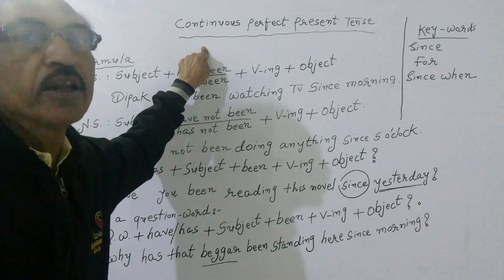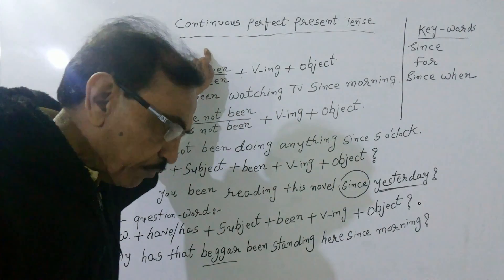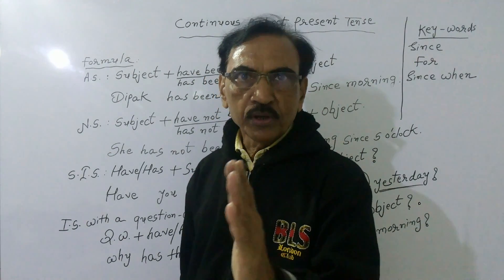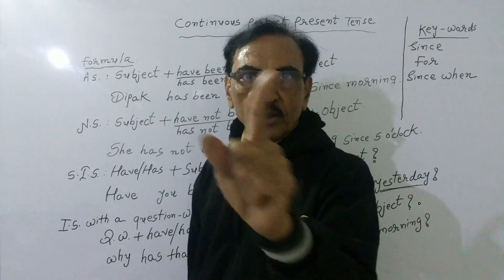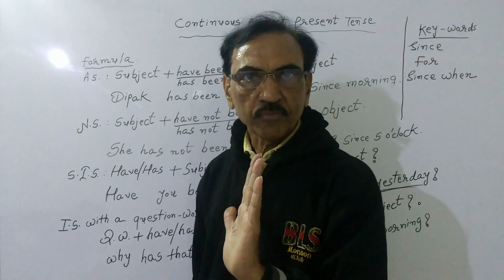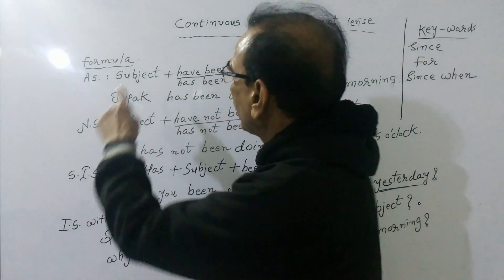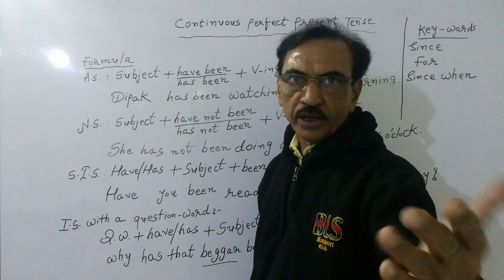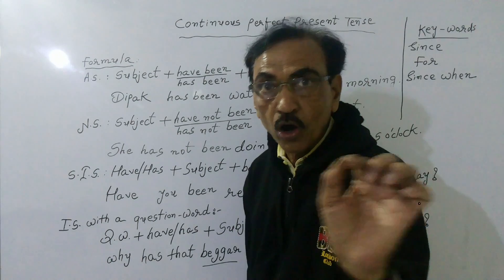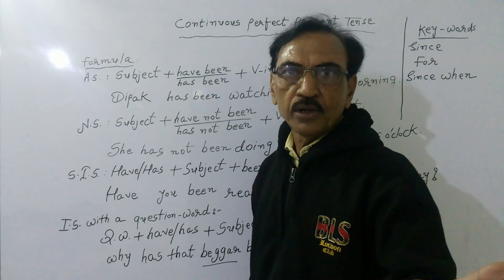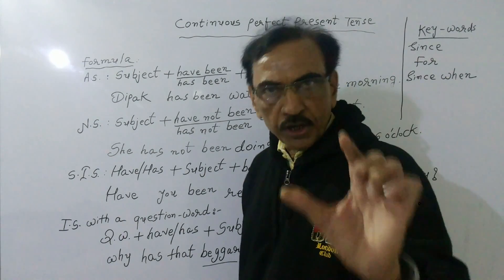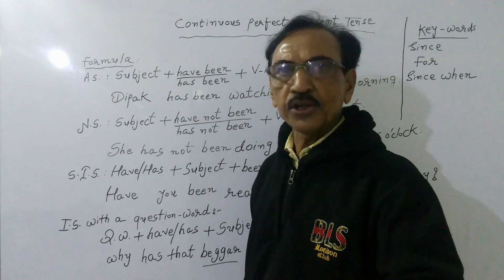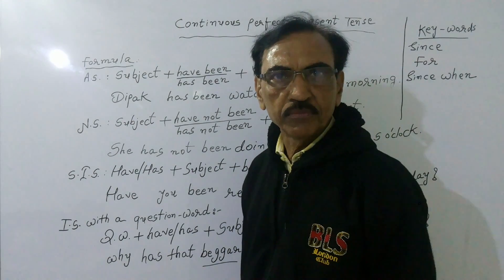Before we depart, I would like to rewind. I will give you the helping verbs: continuous present tense — 'is/am/are'; continuous past tense — 'was/were'; continuous future tense — 'will be.' In continuous perfect present tense, the helping verb is 'have been' or 'has been.' In simple present tense, for negative and interrogative sentences, the helping verbs are 'do' or 'does.' In simple past tense, the helping verb is 'did,' used in negative or interrogative sentences. Simple future tense uses 'shall' or 'will' as a helping verb.